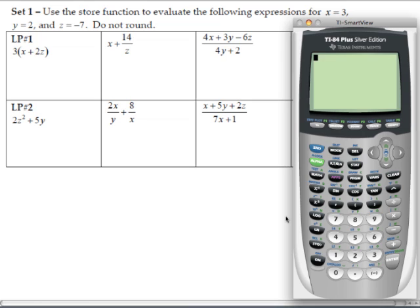There are two ways to store these values into our variables. We can do them separately, which I'll show you right now. For x, I hit 3, the STO button, into my x, hit enter, and the calculator shows 3 has been stored there.